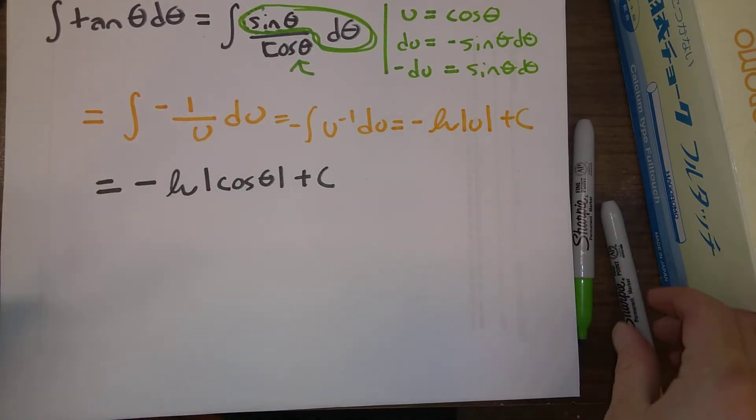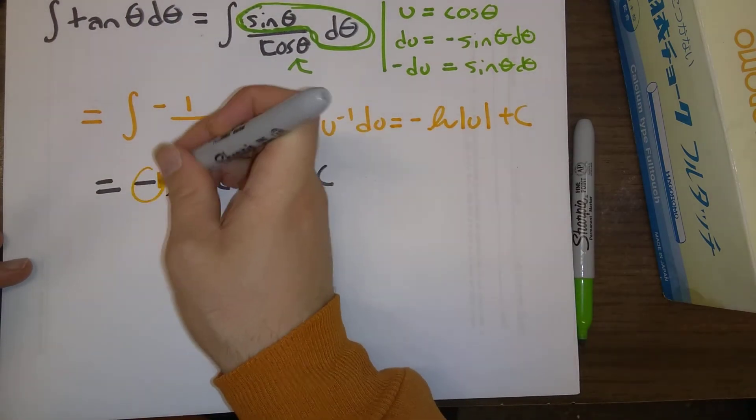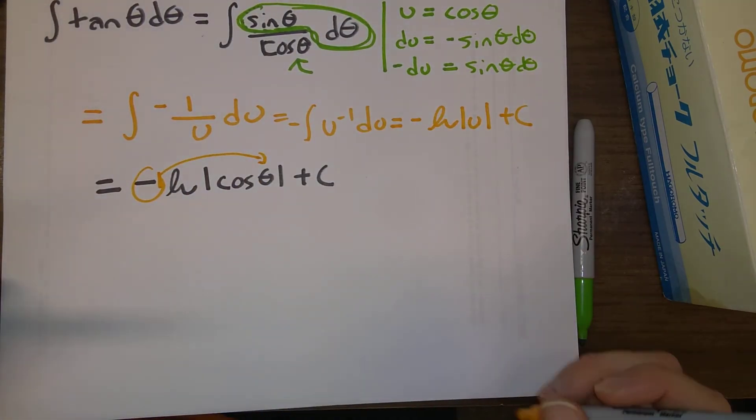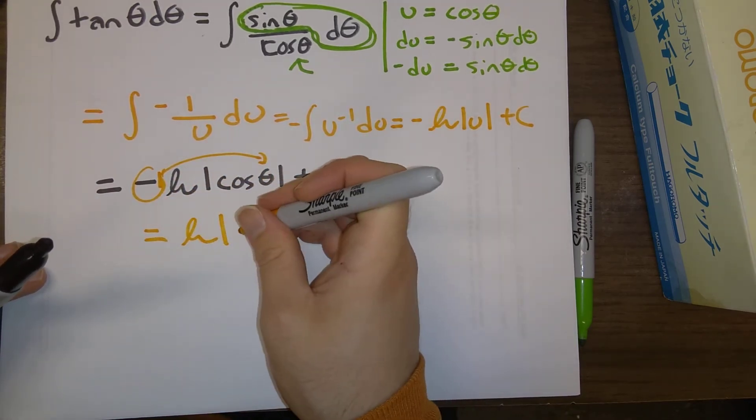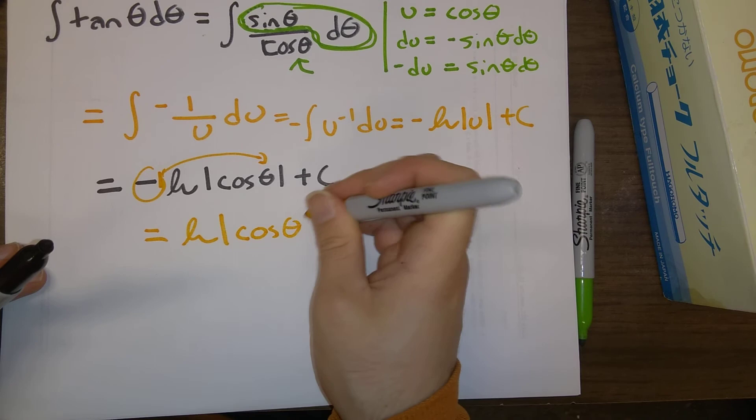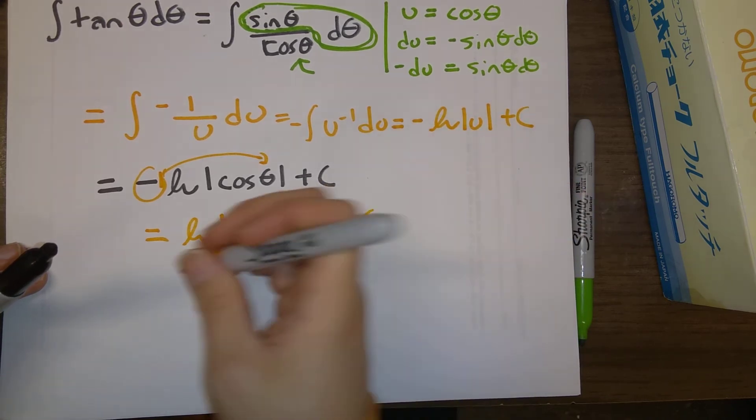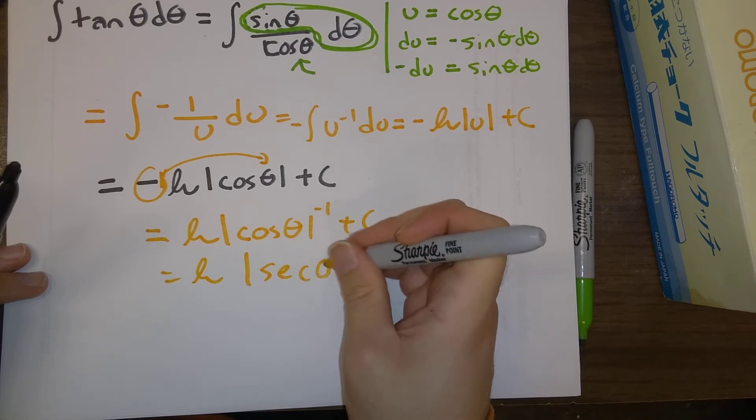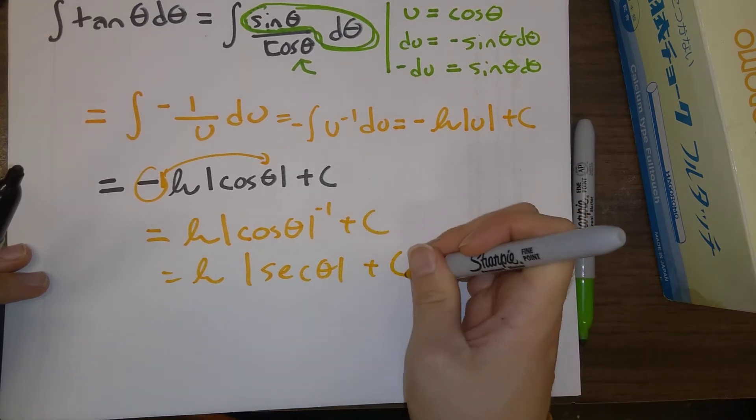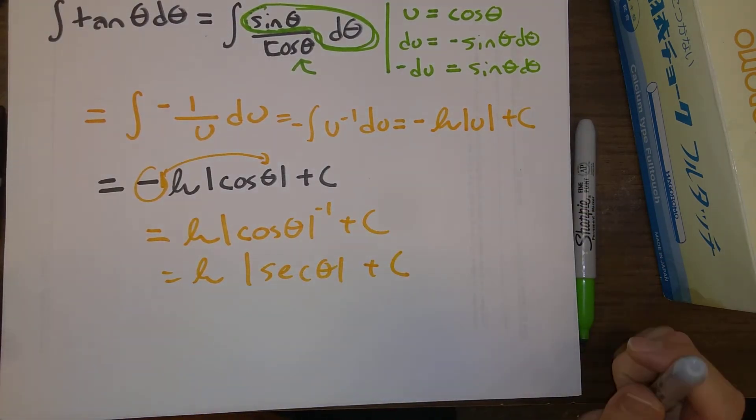An alternative method for doing this would be, writing this, would be we can move that minus 1 exponent upstairs to say, hey, this is actually natural log of cosine theta, absolute value of that to the minus 1. And we can write it as natural log of secant theta, absolute value of that, plus c. So, all of these are equivalent answers here.